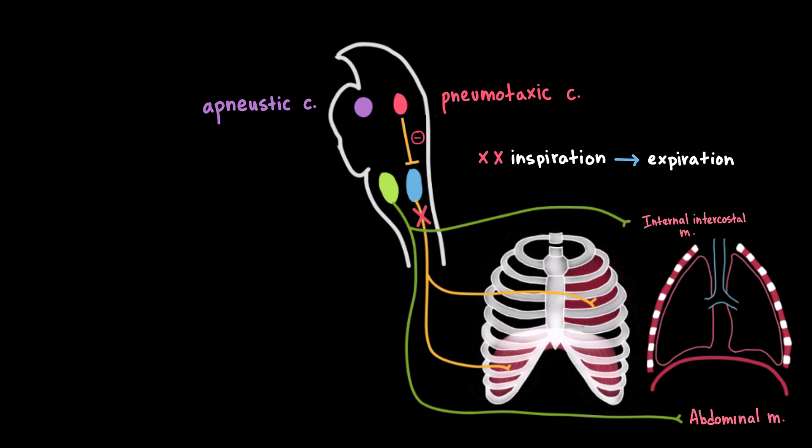In contrast, the apneustic center sends excitatory signals to the dorsal respiratory group, promoting and prolonging inspiration. Together, these two pontine centers help to regulate our breathing pattern.